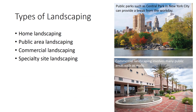Landscaping can be broken down into several categories: home landscaping, public area landscaping such as parks, commercial landscaping, and specialty site landscaping such as zoos. Home landscaping is typically up to the individual homeowner; however, in some cases, developers establish a theme for a given development and landscape the area based on that particular theme.